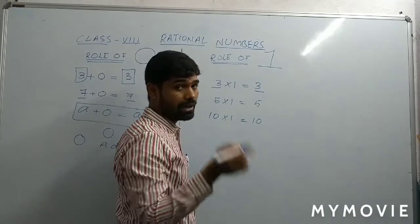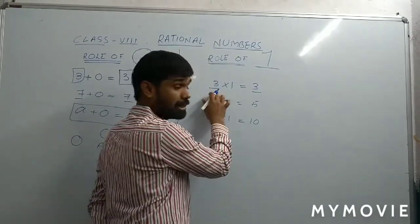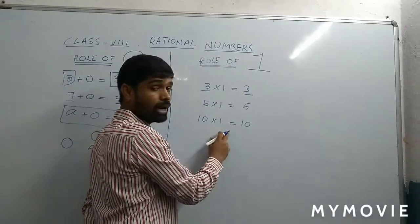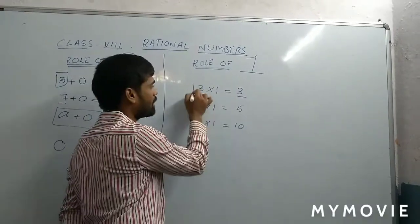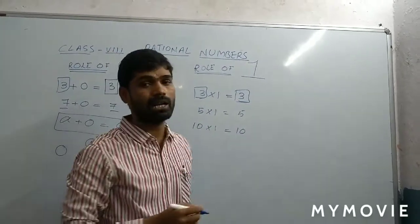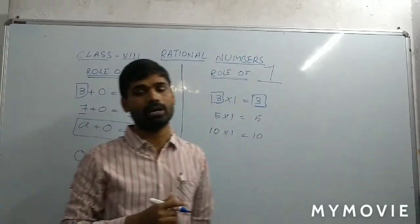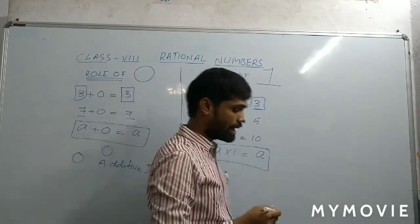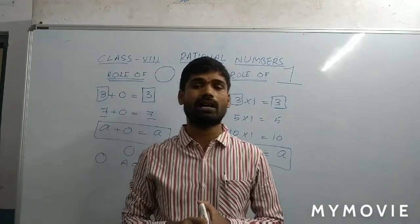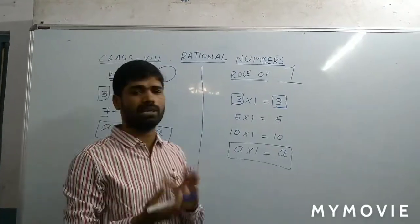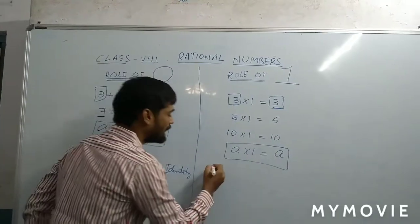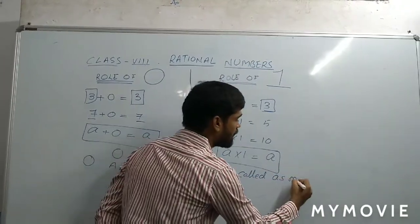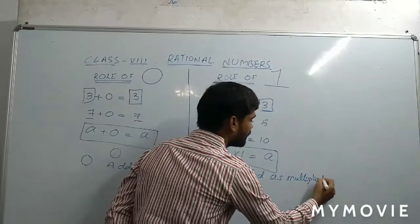Means, the same rational number we are getting. Any number when multiplied with 1, the answer is the same number. For example, A into 1 is equal to A. When a rational number is multiplied with 1, the product is the same rational number — it remains the same, it is not changing. That's why it is called as multiplicative identity. So, 1 is called as multiplicative identity.